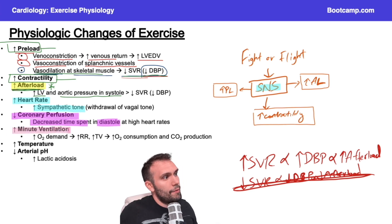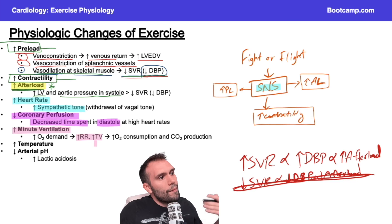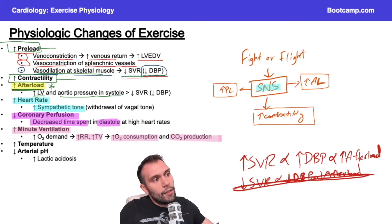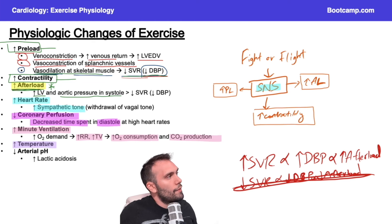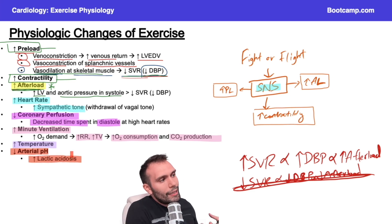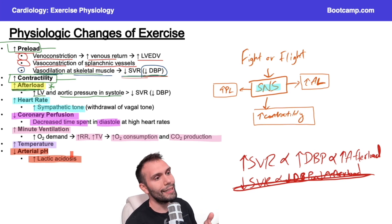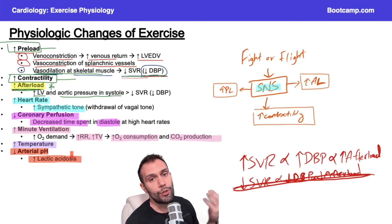Minute ventilation, which involves respiratory rate and tidal volume, also increases — you'd expect someone exercising to have a higher respiratory rate and tidal volume. They're consuming more oxygen to generate ATP via the electron transport chain, and creating more CO2 from the citric acid cycle. Temperature goes up as well, since we're generating heat. As oxygen supply runs short during exercise, lactic acidosis can develop — especially with strength exercises, where you can quickly fatigue a muscle before it can replenish ATP stores. Think of bicep curls: you can only do so many reps before the muscle tires, leading to a localized decrease in arterial pH.